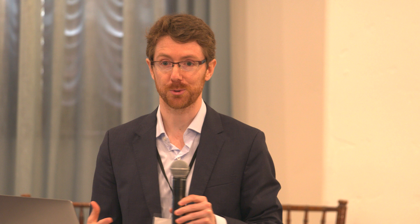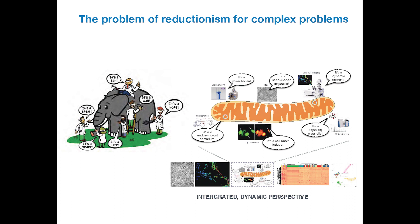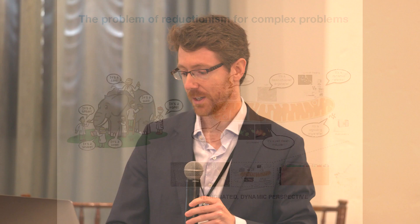There's a problem for reductionism with complex solutions. We're really good at breaking complex things like brains into small pieces. Everyone has seen this before — the blind man and the elephant. If you feel the tail, you say this is a rope. If you feel the chest, you say this is a wall. Actually it's an elephant, but you can't see that until you see the whole thing. That's what's been happening for mitochondrial biology. You use an ATP sensor and say it's an ATP-producing powerhouse; you use a microscope and say it's a dynamic network of organelles. What we need is an integrated dynamic perspective of mitochondria so that we can better understand, measure, and intervene on them.